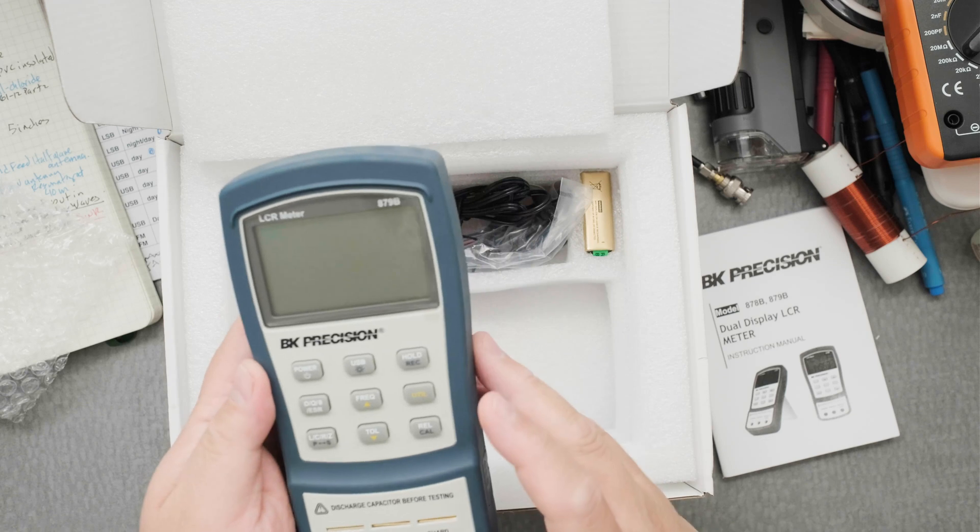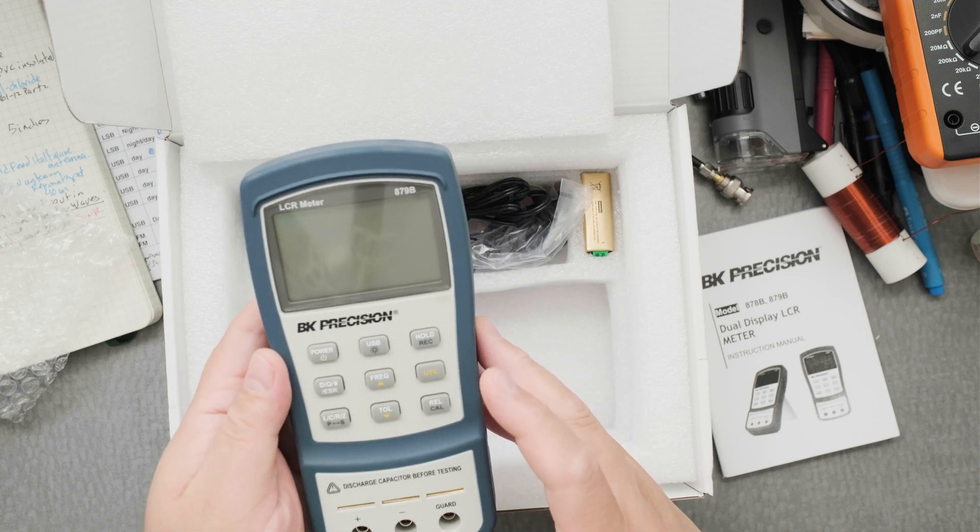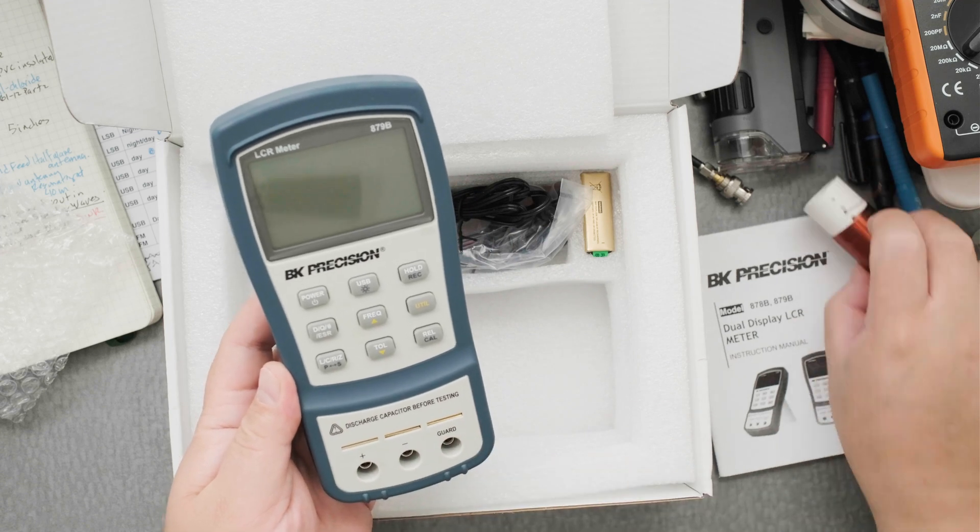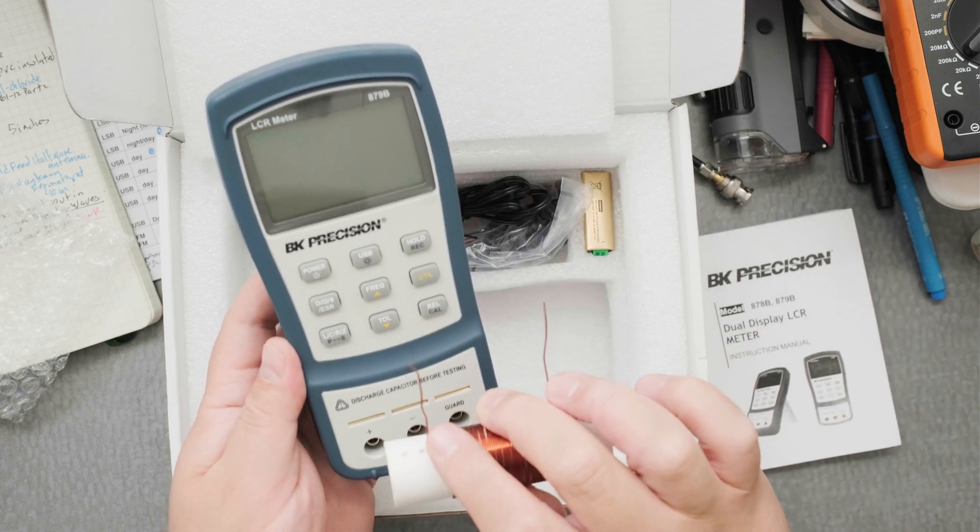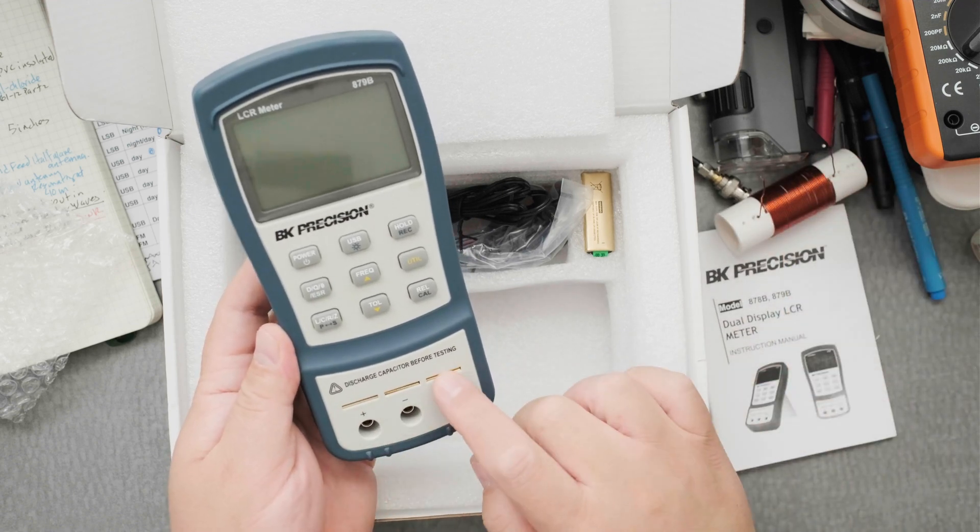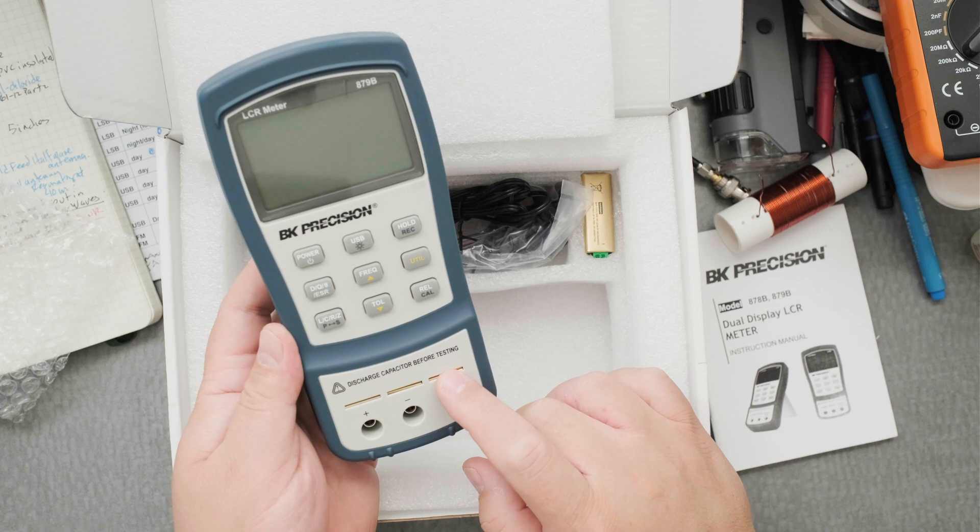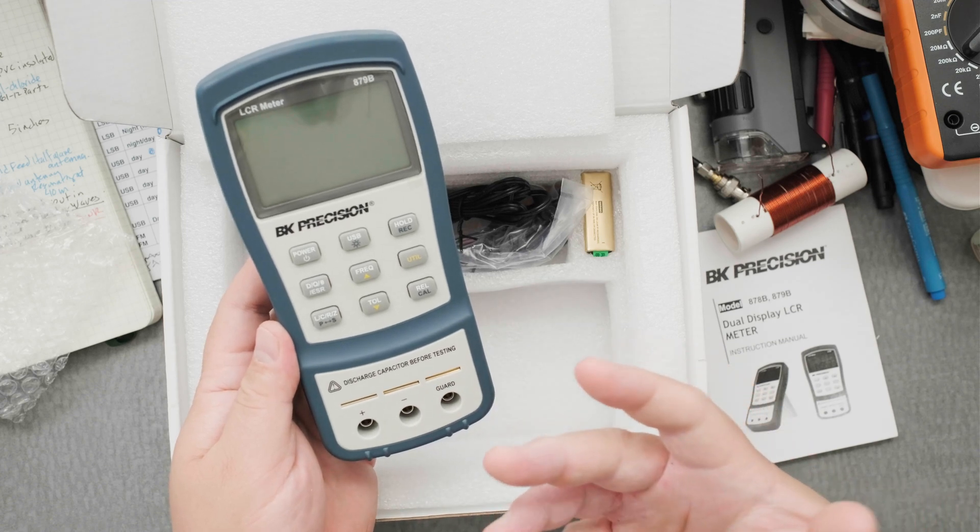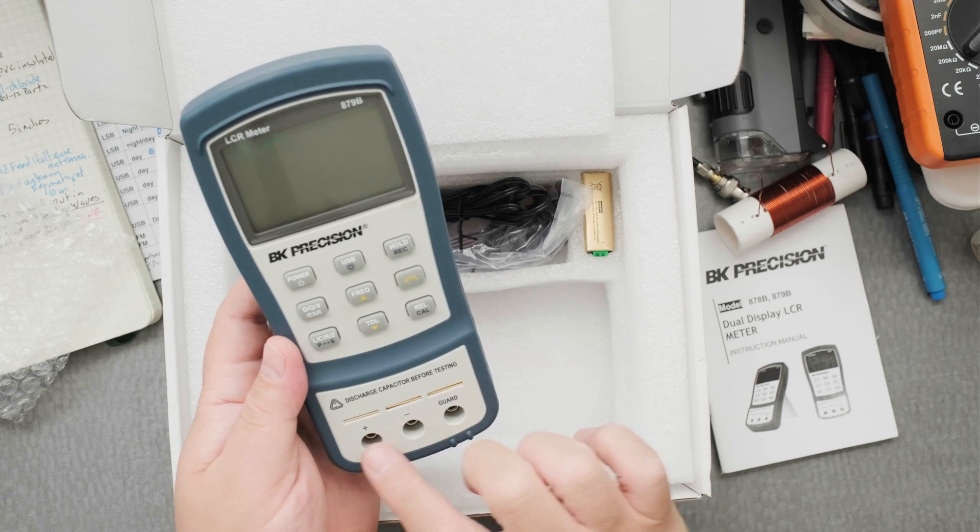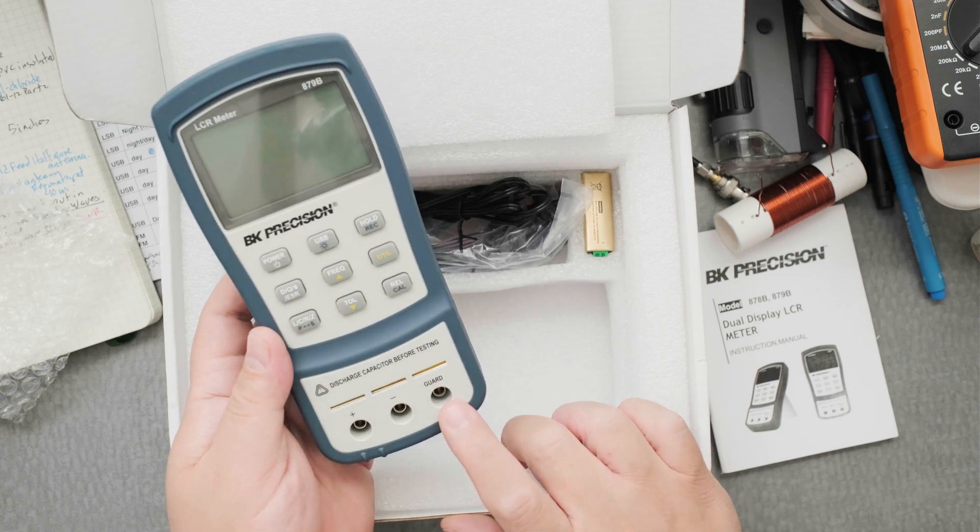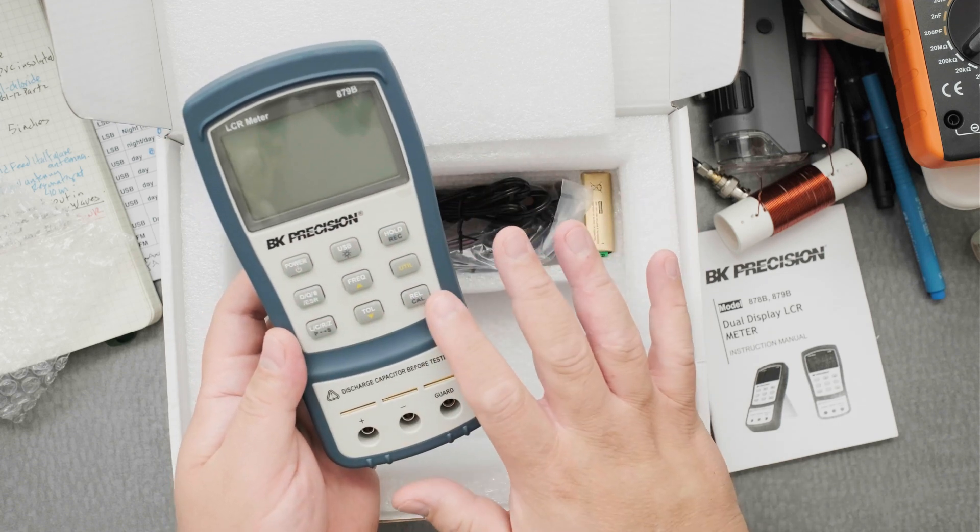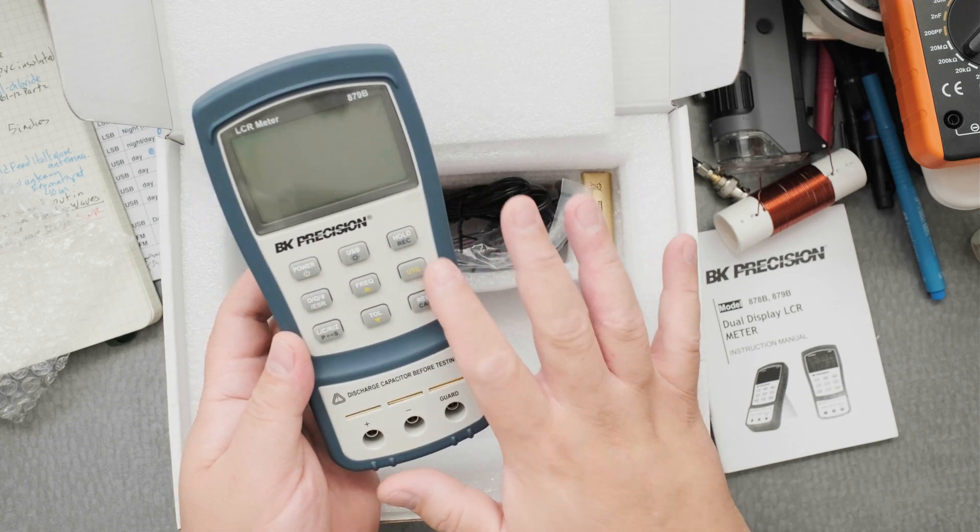Look at that. It has these slots so that you can put the wires of what you're doing directly into the unit. Apparently you do that so the readings will be more accurate. The Proster does have that as well. Then you have the leads and this guard, which apparently is for certain projects.